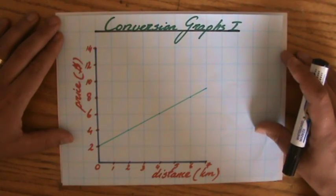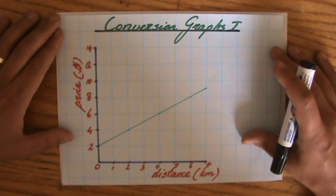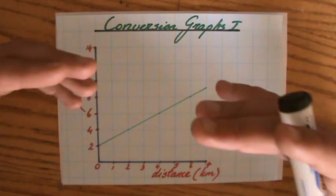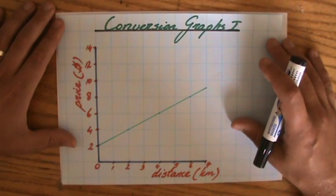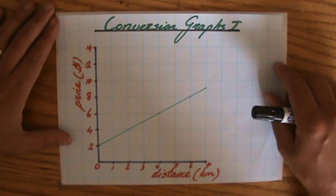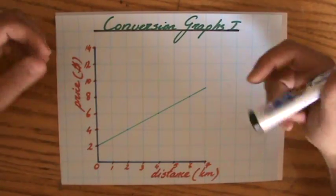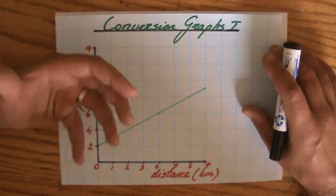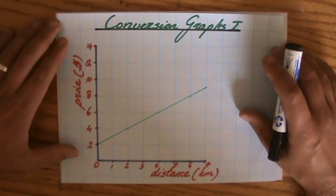So now it's time to have a look at graphs in real-life situations, because graphs are being used all of the time. They're super useful. First of all, we're going to have a look at conversion graphs. And after these conversion graphs, we're going to have a look at distance time, speed time and acceleration time graphs.